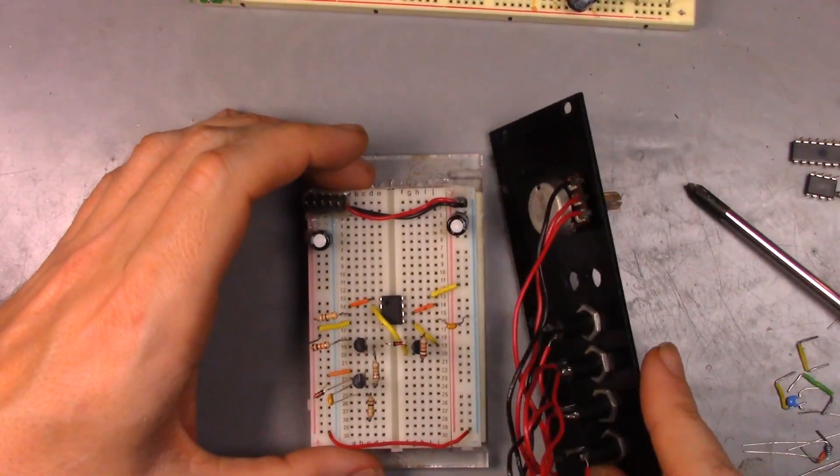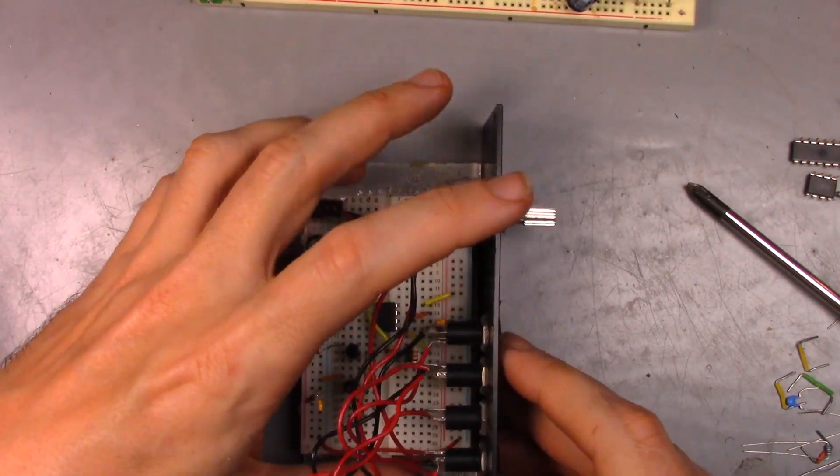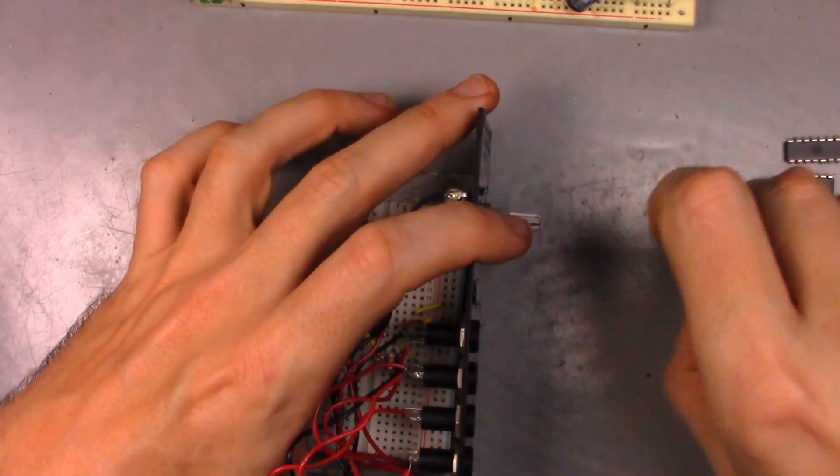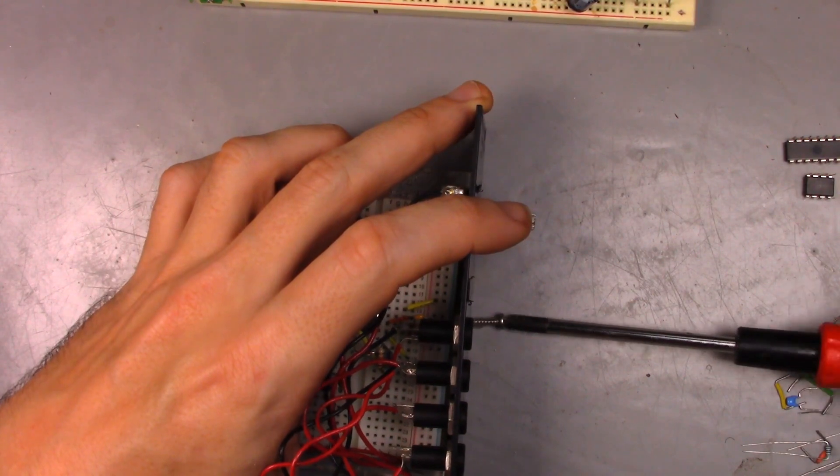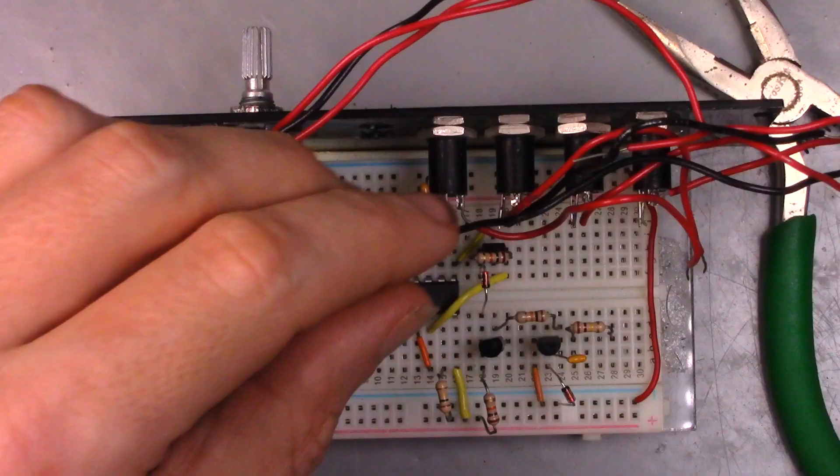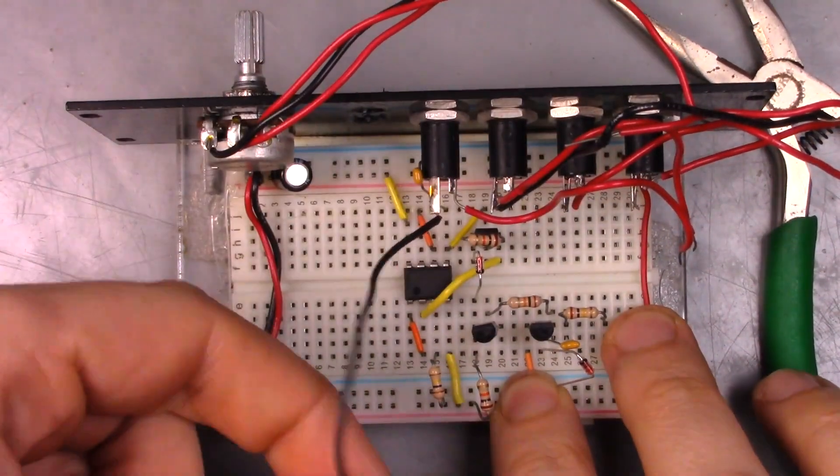Next, the faceplate is brought in and attached with screws. And the wires to the jacks are attached.